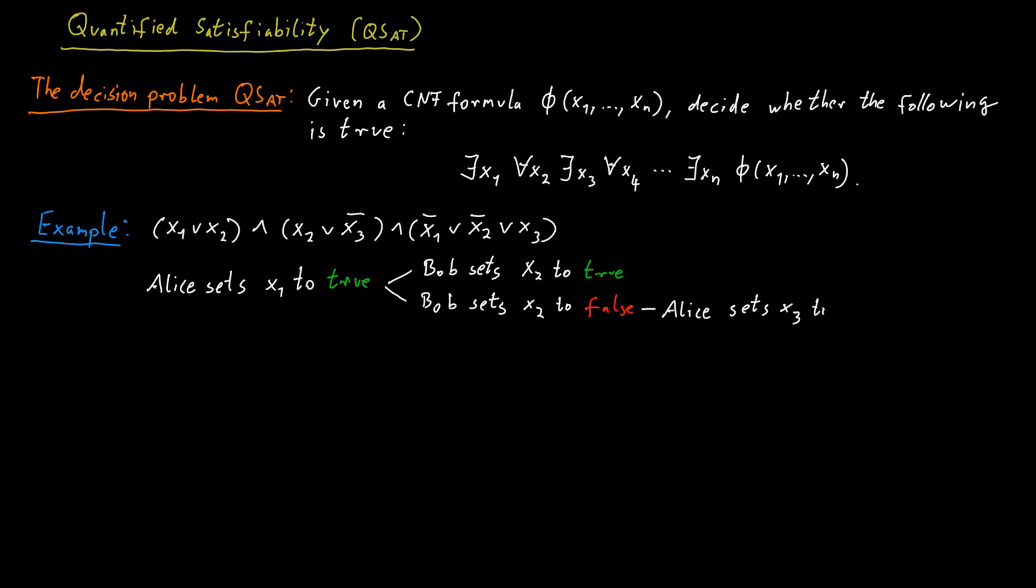Alice then responds by setting x3 to be the same value as x2. So if Bob sets x2 to false, Alice will set x3 to false as well. But if Bob sets x2 to true, then Alice will set x3 to true as well. And this will always make the formula true because look at the second clause here, which is x2 or not x3.